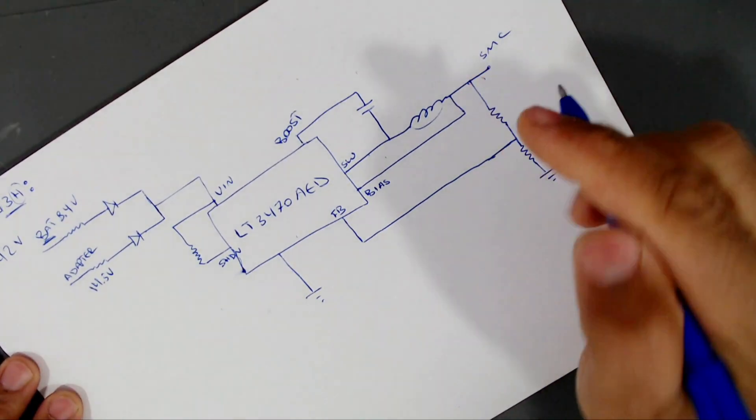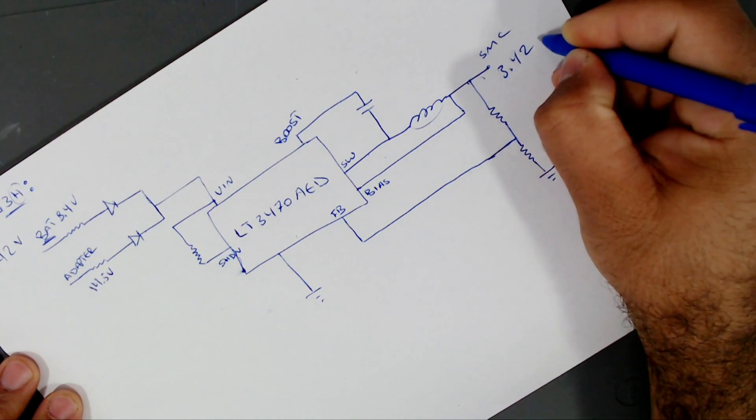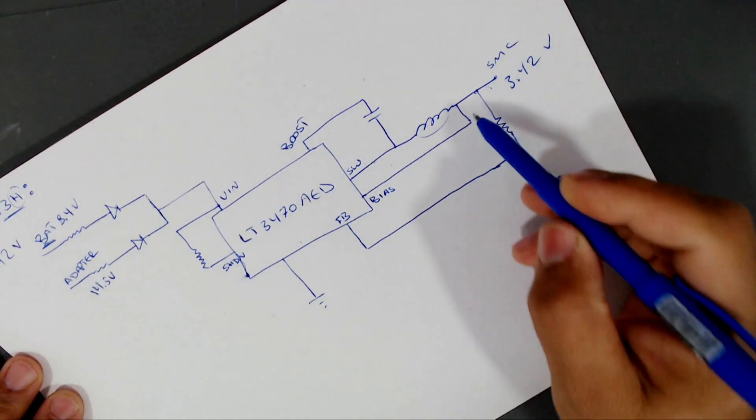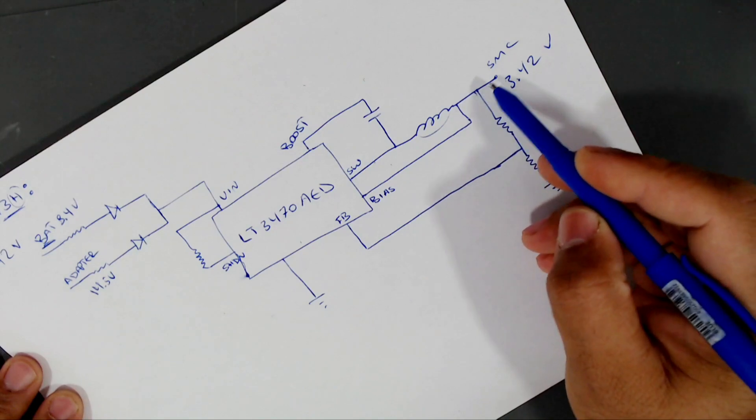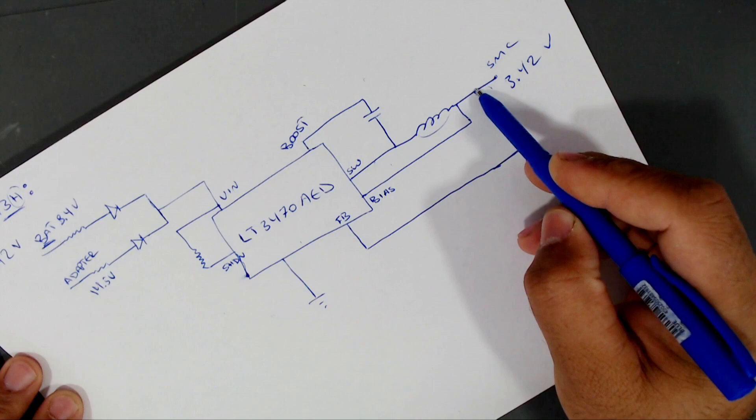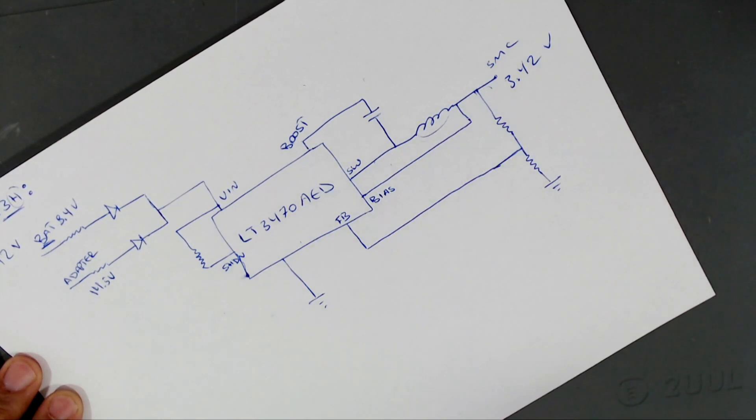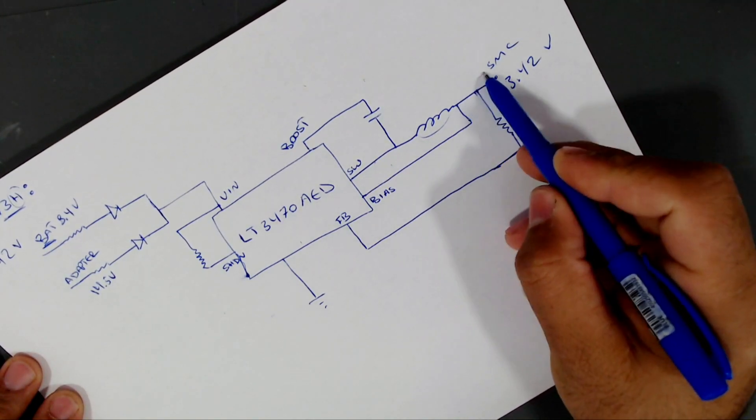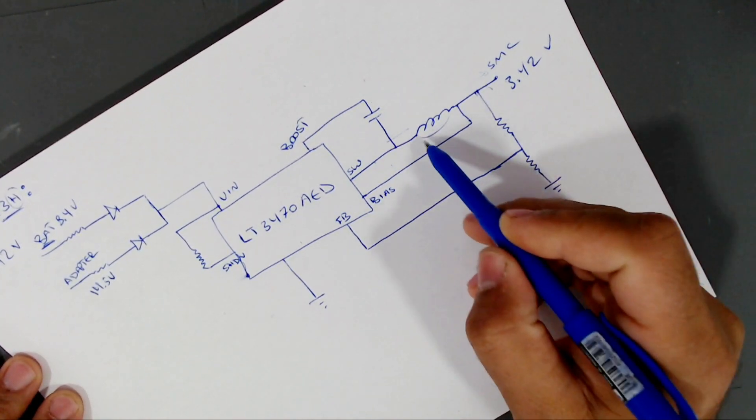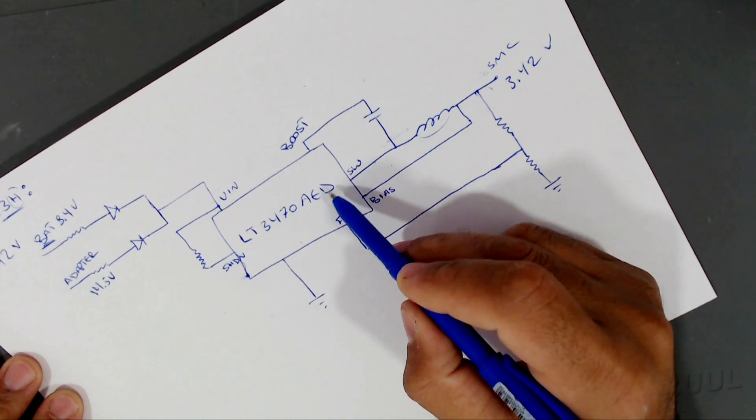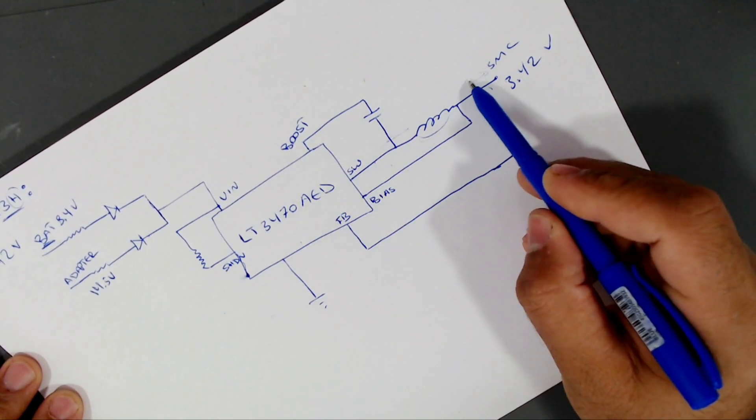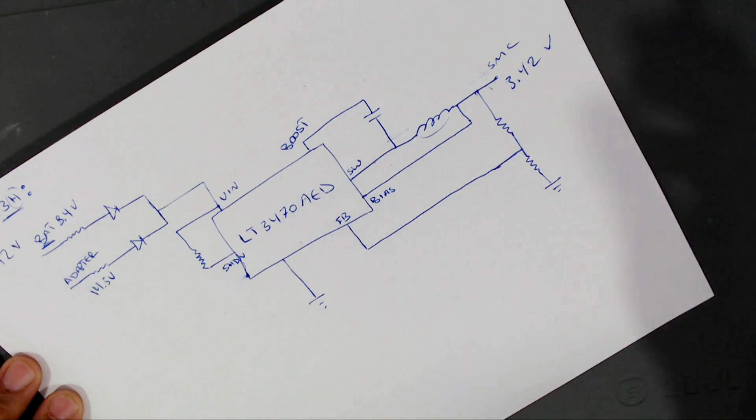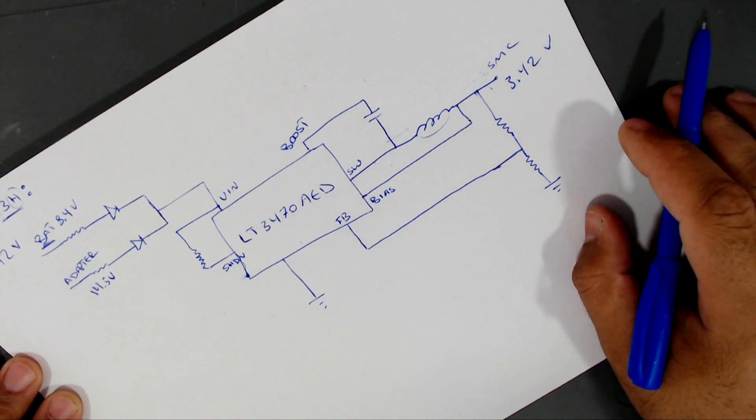So if you have a missing 3.42 voltage at the switch pin, then check do you have a short in here. If you do have a short in this area, first disconnect the inductor, remove it from the board, and then check where you have the short, the load side or to the regulator side. If it is to the regulator side, then the chip is faulty and needs to be replaced. If it is to the load side, then you may have SMC shorted or maybe another capacitor within the circuit.